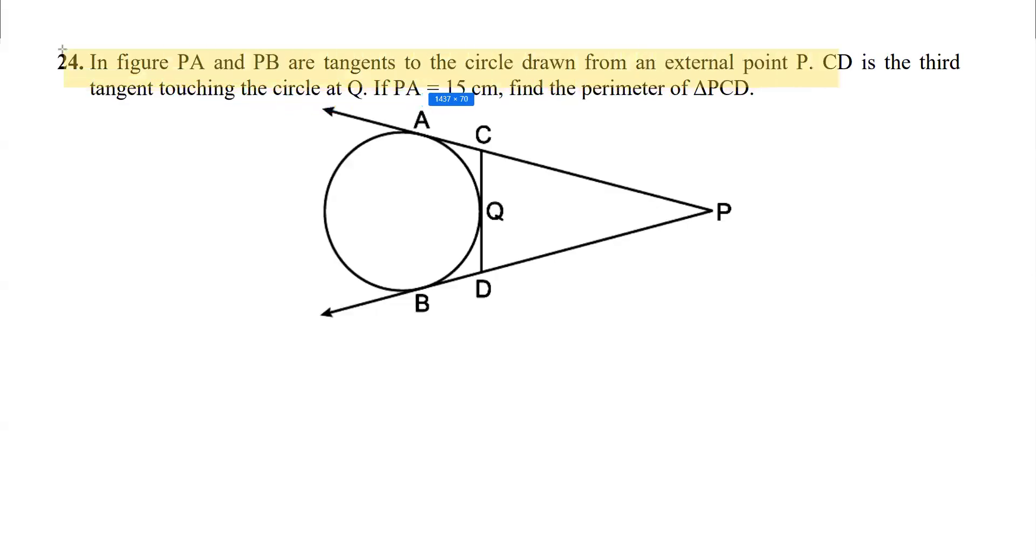In this figure we are given two tangents PA and PB from an external point P. Further, a line CD is drawn which is also a tangent touching the circle at point Q, which is the point of contact.